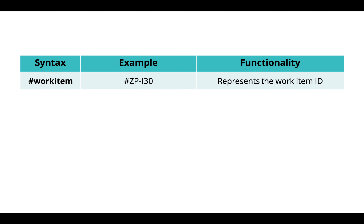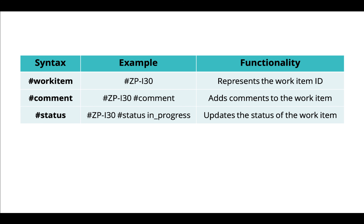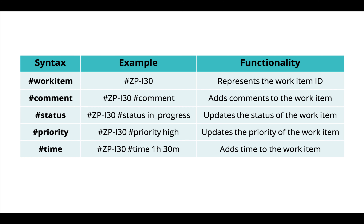Now I'll quickly summarize the syntax along with the example and the functionality. Hashtag work item ID represents the work item. Hashtag comment adds comments to the work item. Hashtag status followed by the name of the status updates the status of the work item. Hashtag priority followed by the name of the priority updates the priority of the work item. Hashtag time followed by the duration in hours and minutes adds time to the work item.